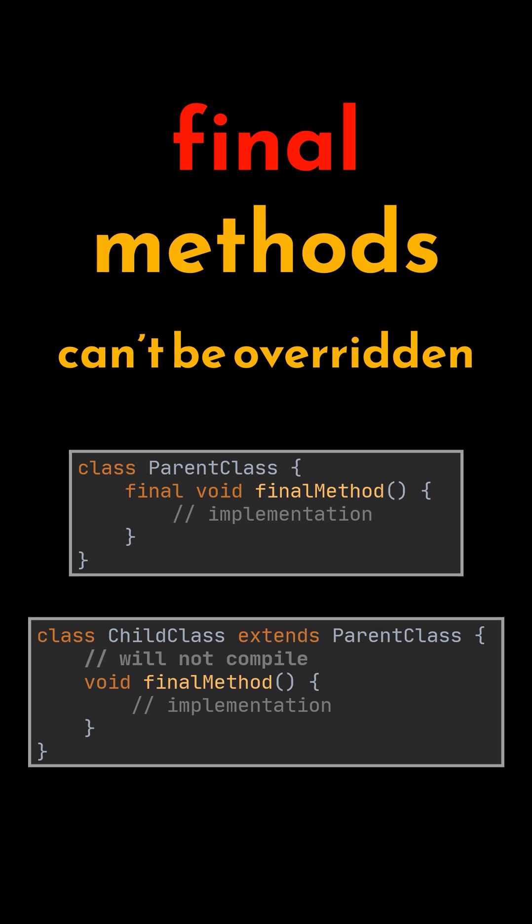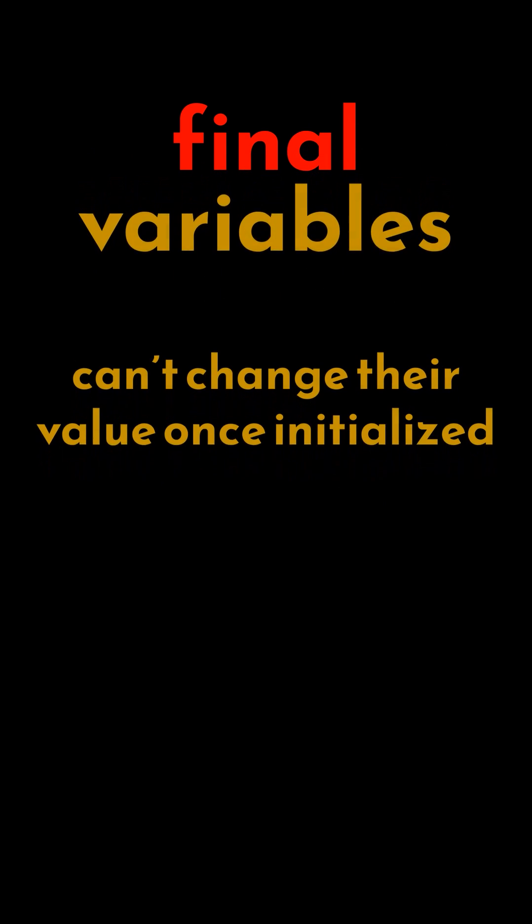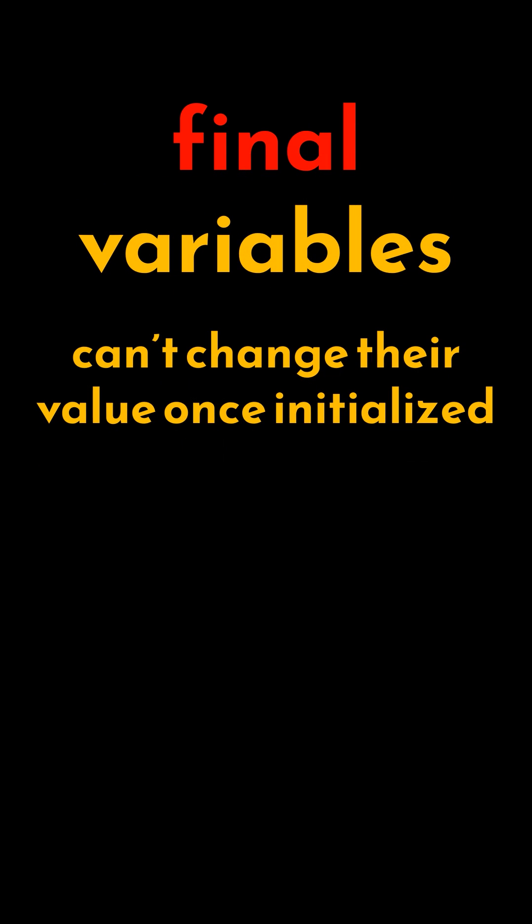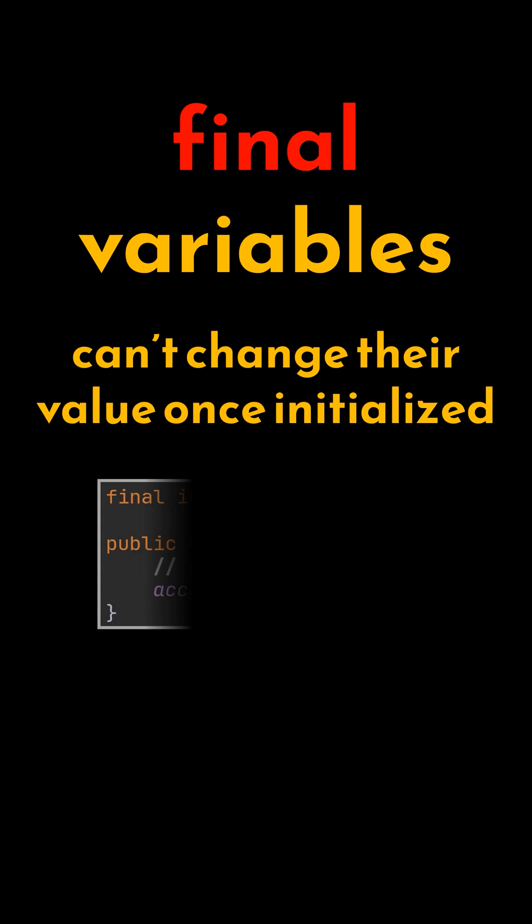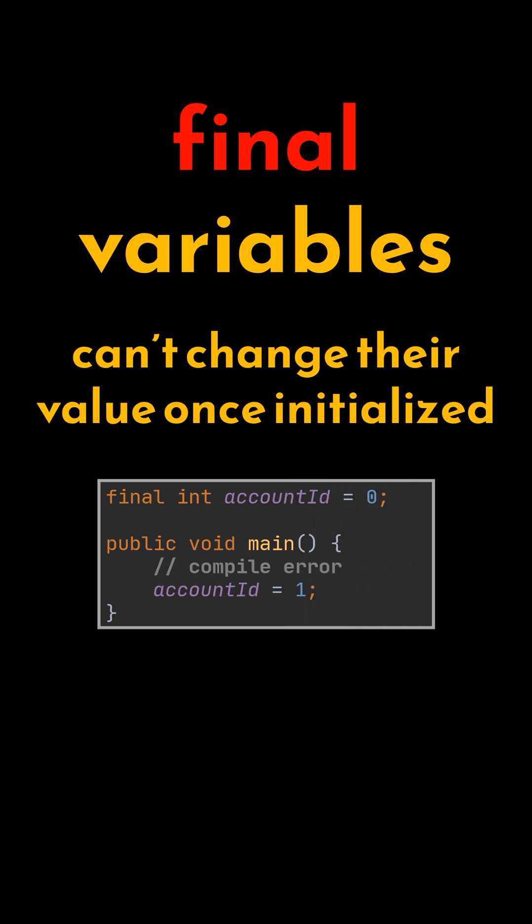Finally, variables can also be declared as final. This means that their values cannot be changed once initialized. In this example, the declared integer we see can't be reassigned after it is initialized.